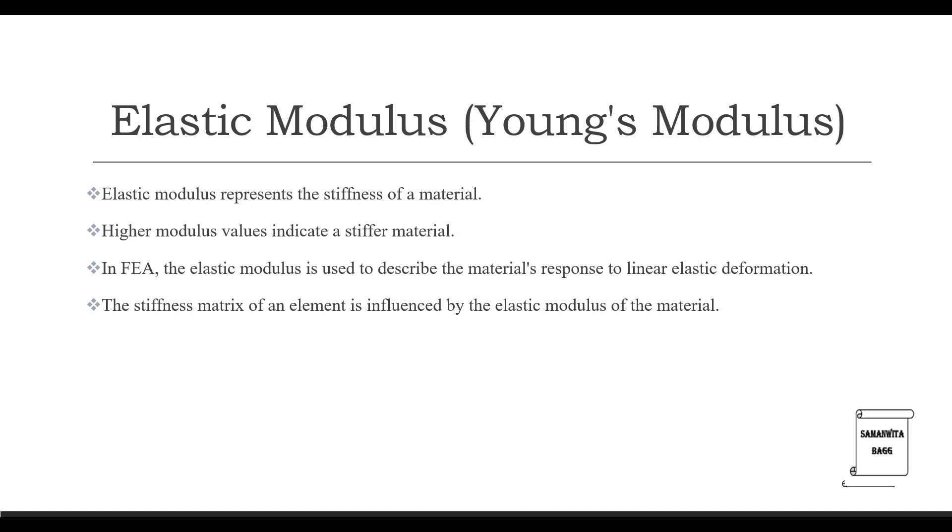Here's how material properties are significant in FEA and how they are incorporated into the analysis. First we will talk about Young's modulus, that is elastic modulus or modulus of elasticity. Elastic modulus represents the stiffness of a material. Higher modulus values indicate a stiffer material. In FEA, the elastic modulus is used to describe the material's response to linear elastic deformation. The stiffness matrix of an element is influenced by the elastic modulus of the material.